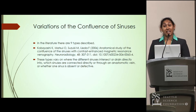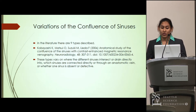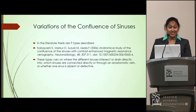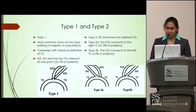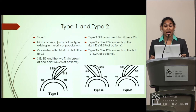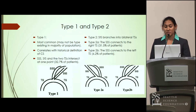The confluence of sinuses is highly variable, and in the literature there are nine different types. They vary based on where the different sinuses intersect, where they drain into, which sinuses are connected to which, whether there's an anastomotic vein connecting the sinuses, or whether a sinus is absent or defective, like our patient. Type 1 is the most commonly observed and correlates with the historical definition, where all sinuses intersect at the confluence at one point — 32.7% of patients have this type.